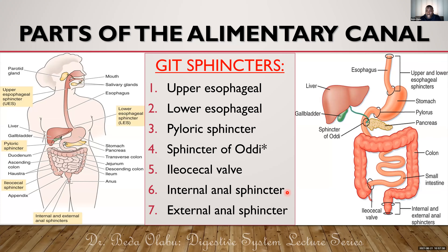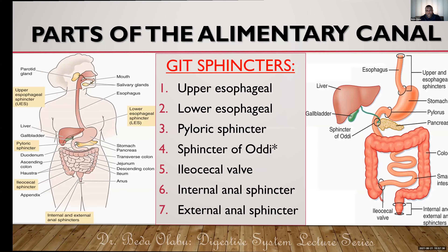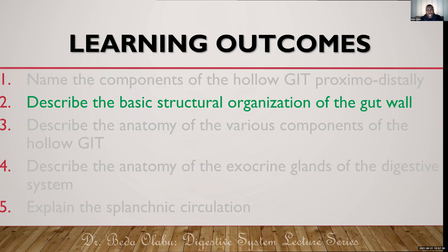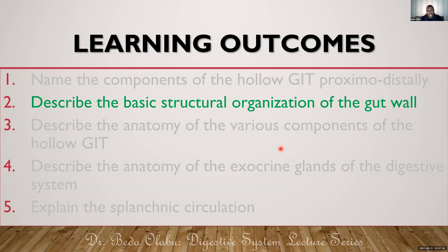The external sphincter is consciously controlled; the internal sphincter is involuntary. They both control output from the rectum. That is the path followed by food from the oral cavity all the way to the anal canal.